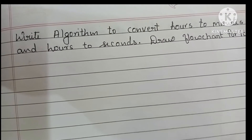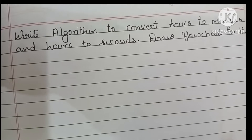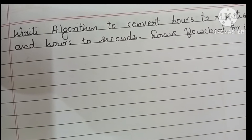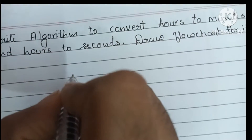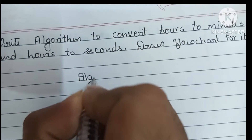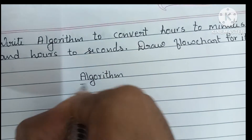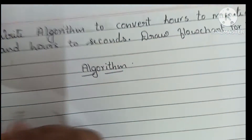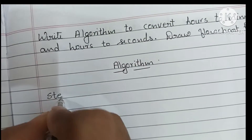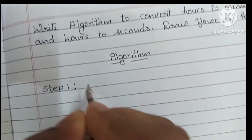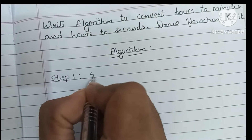Hi guys, in this video we're going to learn how to write an algorithm to convert hours to minutes and hours to seconds format, and draw a flowchart for it. First we're going to write the algorithm. An algorithm is a step-by-step process to solve the problem. Step 1 always starts with a start statement, so first we have to write the start statement.